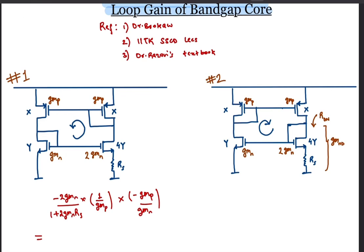Thus, the loop gain is simply 2 over 1 plus 2GMN RS. This is less than 1 in magnitude for typical GMRS values. Hence this topology is stable despite having positive feedback.